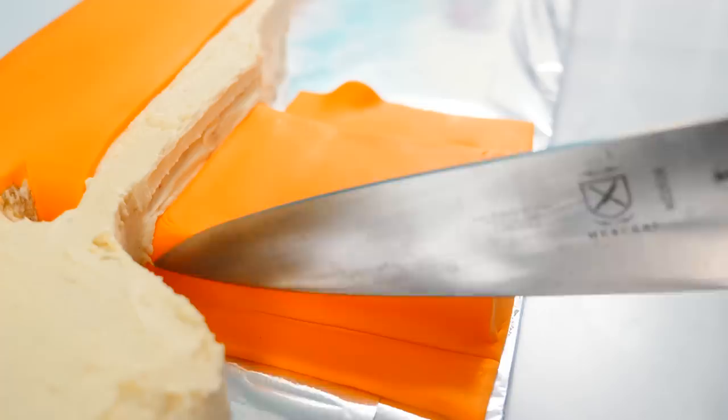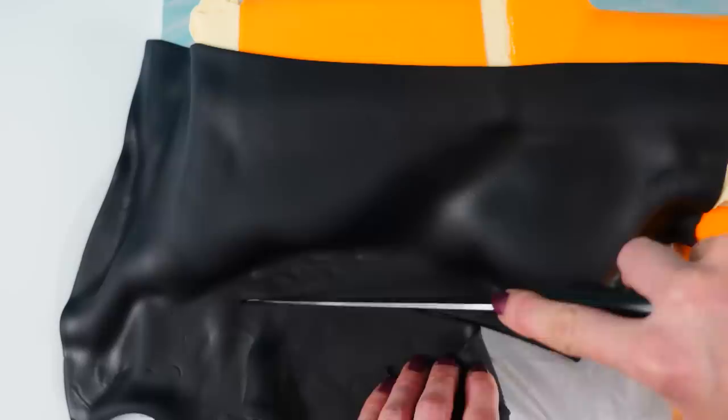Roll out some black fondant and place that over the bottom half of the back of the cake. Now use your fingers just to smooth it around the shape of the cake and then you want to trim off the excess from around the base.